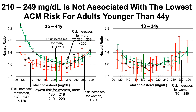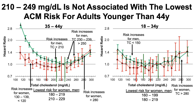For men aged 18 to 34, 180 to 220 is associated with the lowest risk of death for all causes. Risk increases at total cholesterol levels less than 150 and also greater than 260. So for young men, a U-shaped curve is still present, albeit with values that are different from the older age groups.